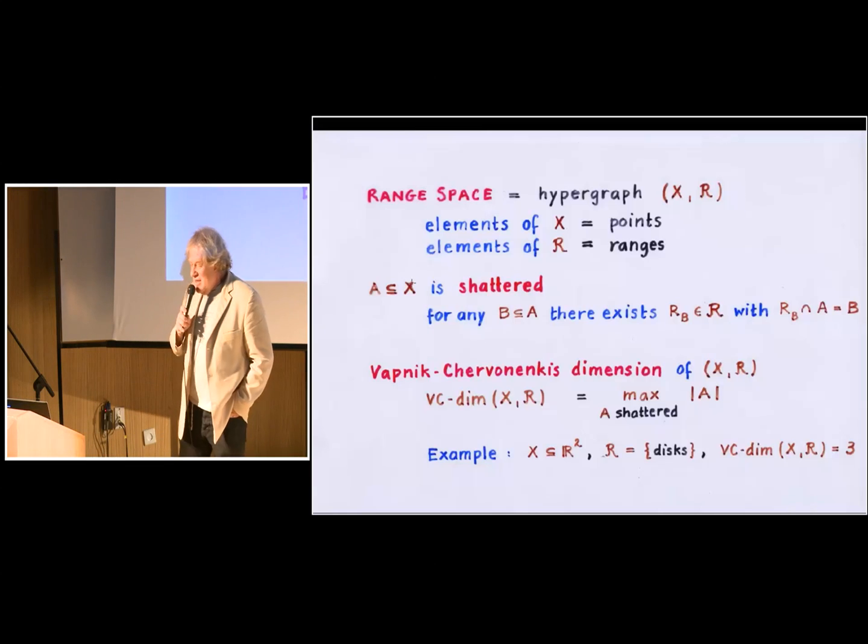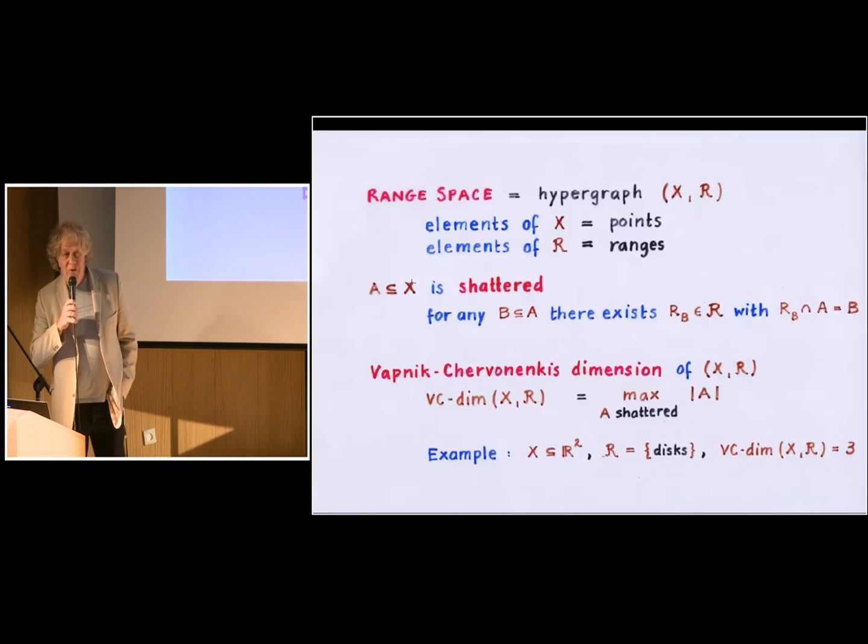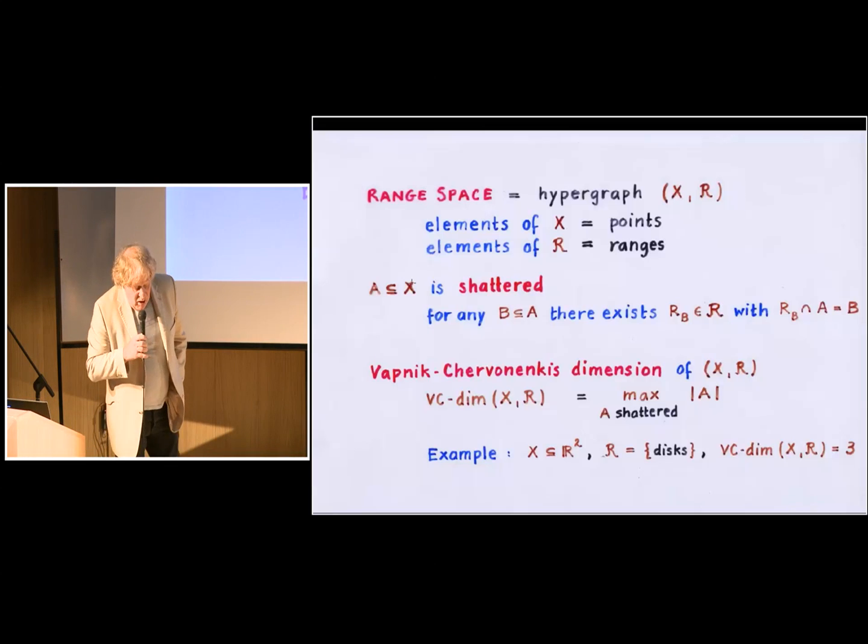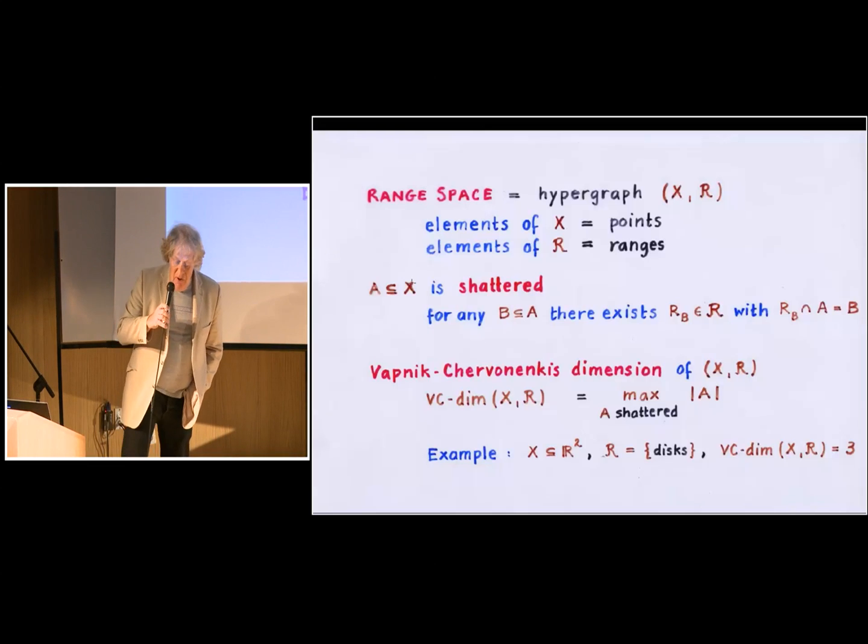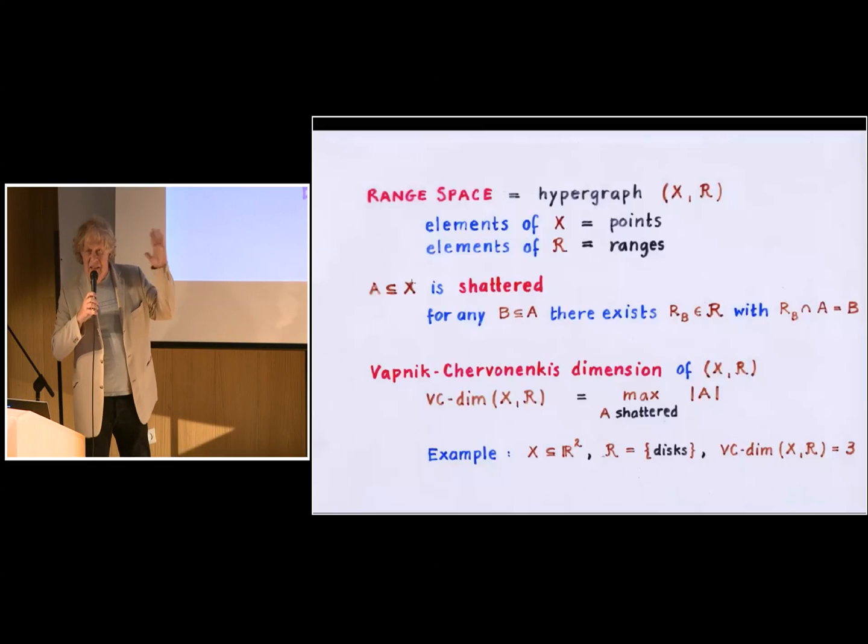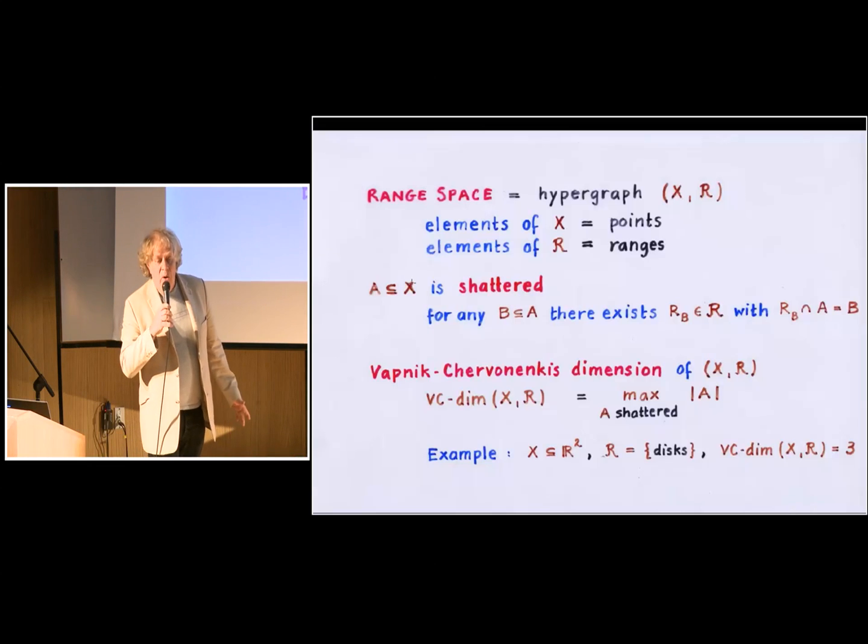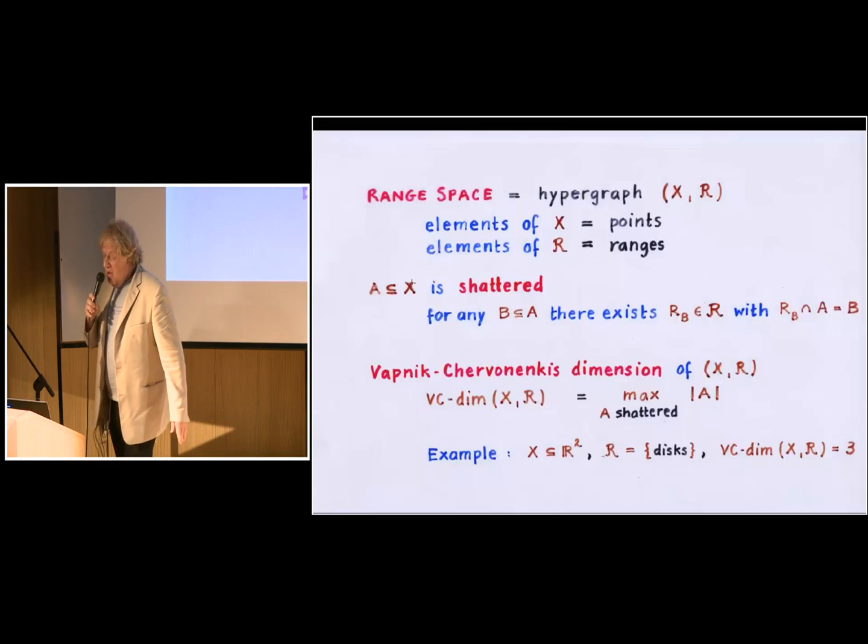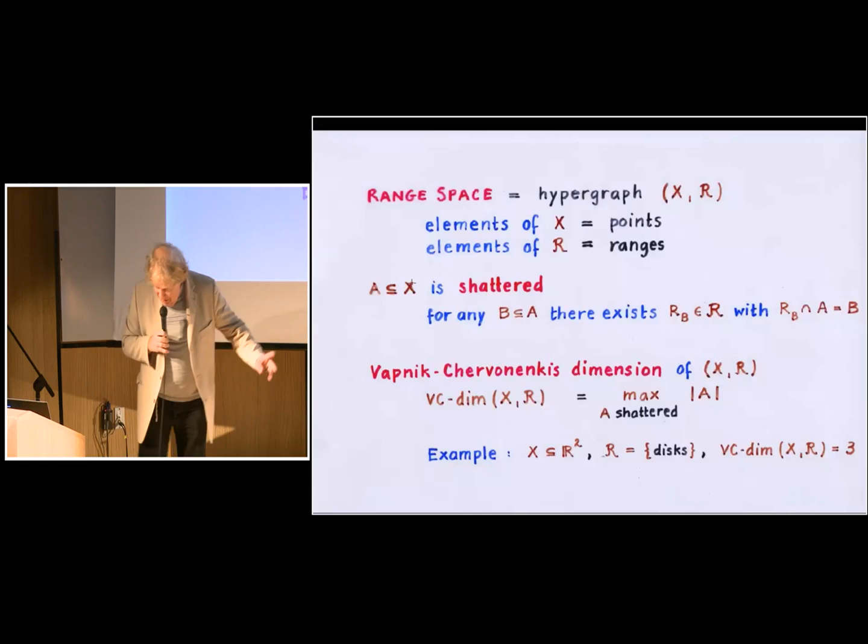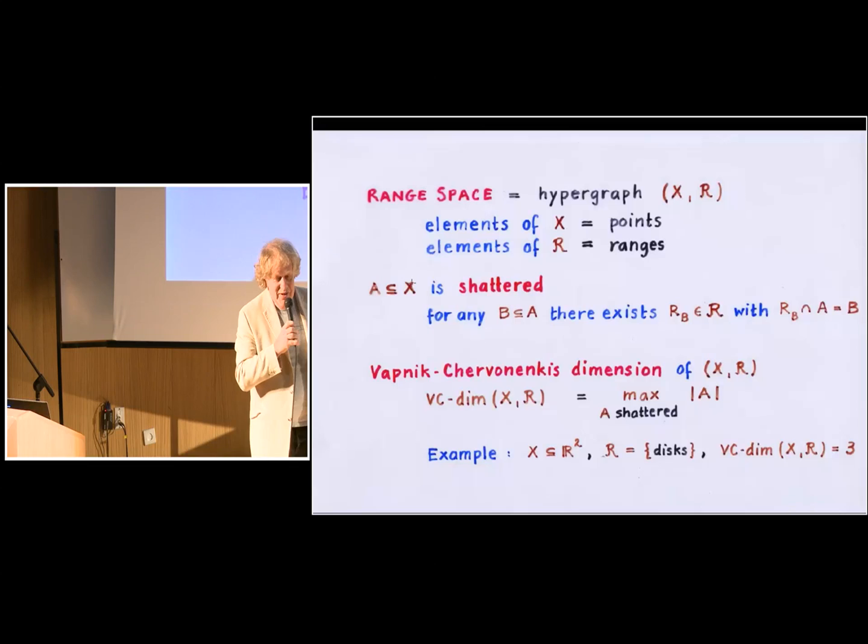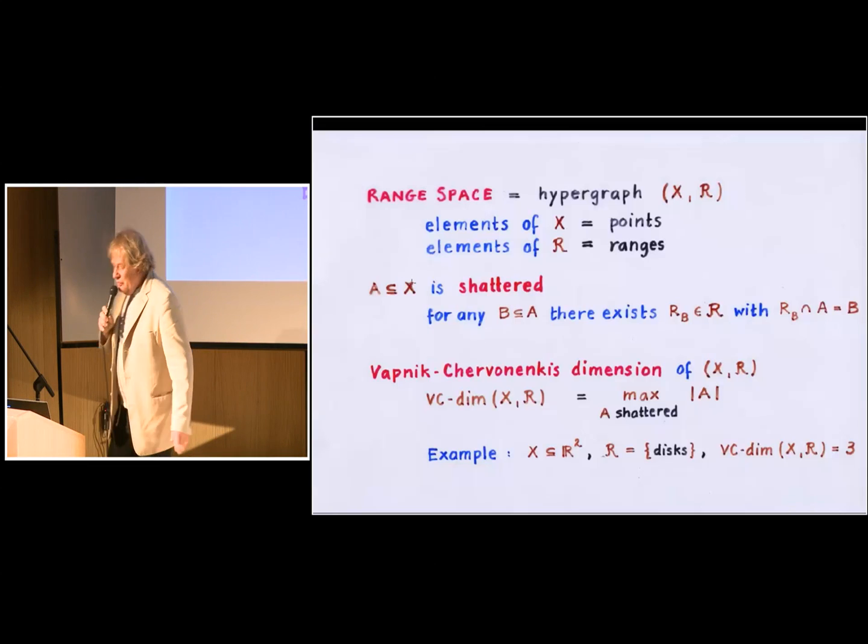So a range space is a pair, and X is an underlying set, and the set of hyper edges are called ranges, and this is this fancy letter R, which denotes the ranges. And then, now it will be really impossible, I guess, to use the blackboard or whiteboard, but never mind. So if you have a range space, or you have a hypergraph, then a subset of the vertex set, you call shattered, if the following thing is true.